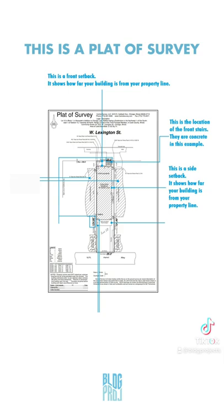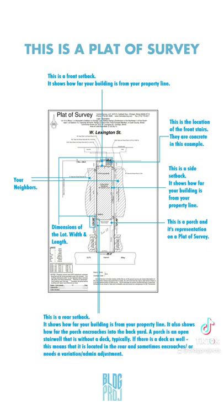This is a porch and its representation on the plat survey. This line right here represents your neighbor's property. This line right here shows the dimensions of the lot — the width and the length. And finally, this is the rear setback; it shows how far your building is from your property line.